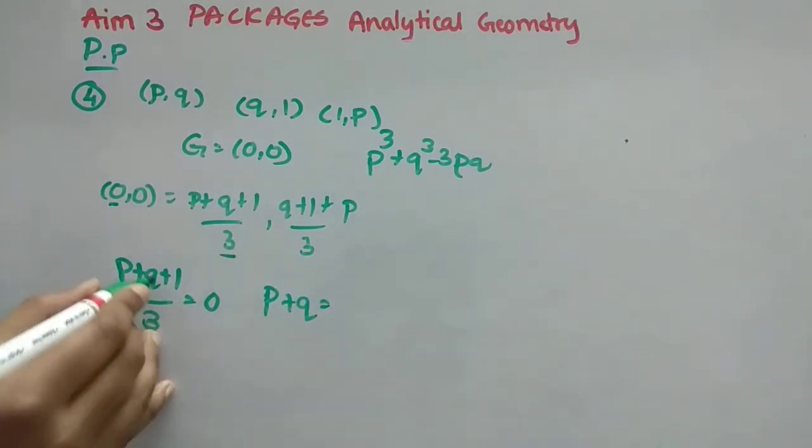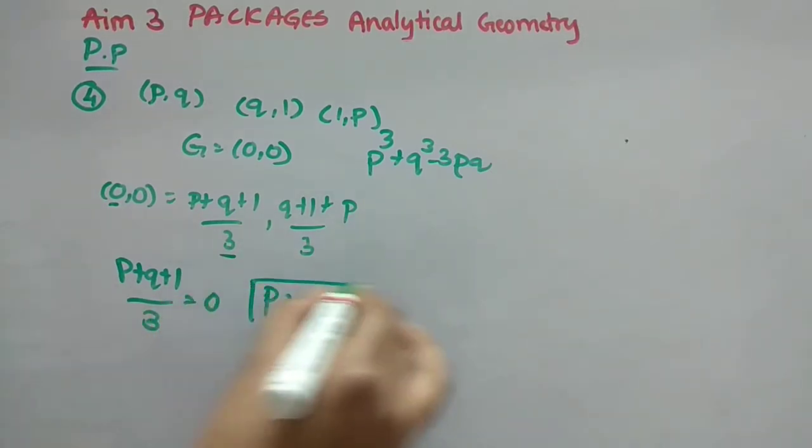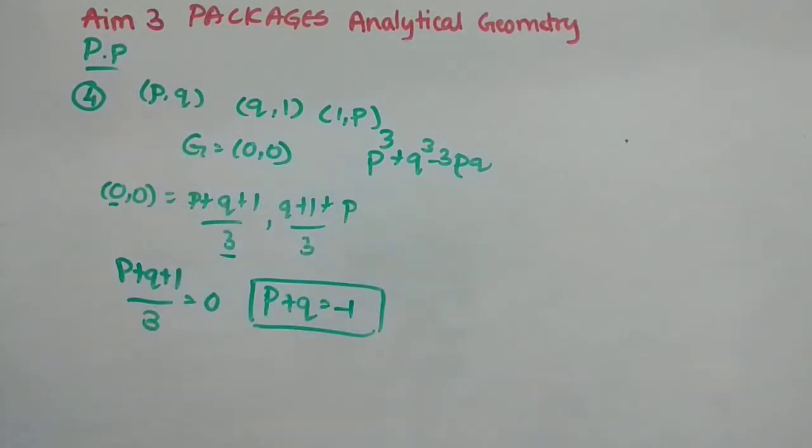So what we are supposed to do, these two should be equal, right? So see, this is both the same, only Q plus 1 plus P and P plus Q plus 1 are both the same. So I will be taking first equation equal to 0. Now if I send 3 to RHS, 0 into 3 is 0 only. Then plus 1 if I send, it becomes minus 1. So this is the thing you have to box it and keep. But it is not the answer. Wait.